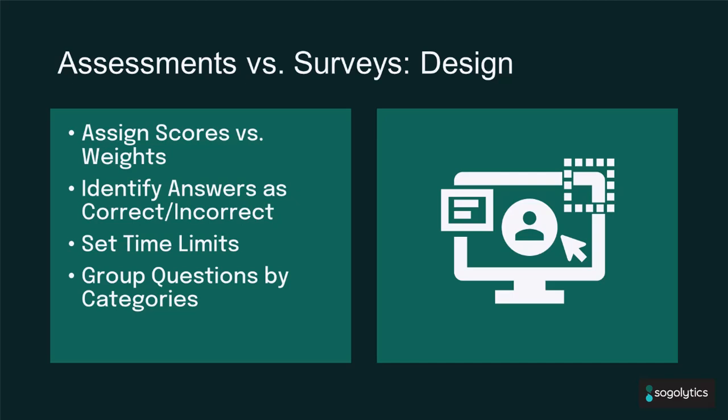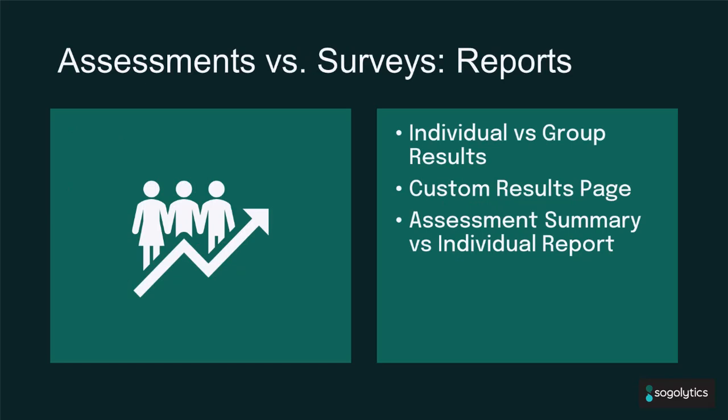In an assessment tool, you get the ability to assign points to the correct answers and you can mark the answers as correct or incorrect. You get the ability to set time limits and you can choose to display to the participant. You can also group questions by categories and show category level scores and percentages. From a reporting standpoint, the assessment tool is more focused on the individual report as compared to the cumulative report. Another interesting feature is that you get the ability to show a custom results page at the end of the assessment to the participant once they hit the submit button.